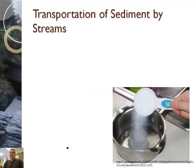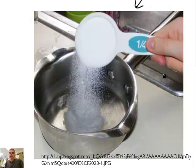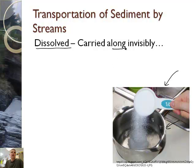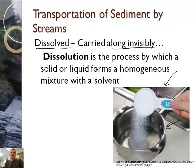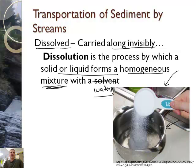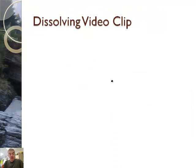Transportation of sediment by streams. There are several types of things that can be transported. The first is dissolved particles. You probably understand the concept: if I take some salt and drop it into water, it sort of disappears — but it isn't really gone. It's carried along invisibly. This is the process of dissolution — the process by which a solid forms a mixture with water. In a river, things can dissolve, so let's do a quick video clip to show how that works.